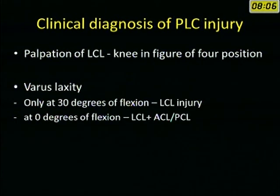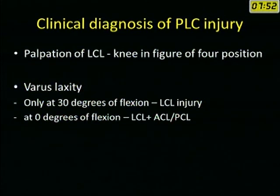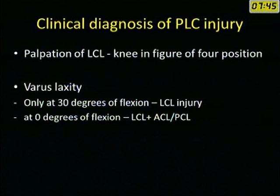For the diagnosis of posterolateral corner, we can palpate the lateral collateral ligament in the figure-of-4 position. It is identified as a firm cord between the head of the fibula and the lateral epicondyle of the femur. On varus laxity, we can identify lateral collateral ligament injury if it is only at 30 degrees of flexion. At 0 degrees of flexion, this is combined with a cruciate ligament injury.